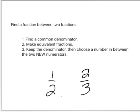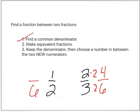Finally, a tough one. I want you to give me a fraction in the middle of one-half and two-thirds. I'm going to find a common denominator. Two times three is six, so I'm going to use six as my common denominator. Three times two is six, so I'm going to take two times two and I get four. On the other side, two times three is six, so I'm going to take one times three and I get three. I made equivalent fractions.